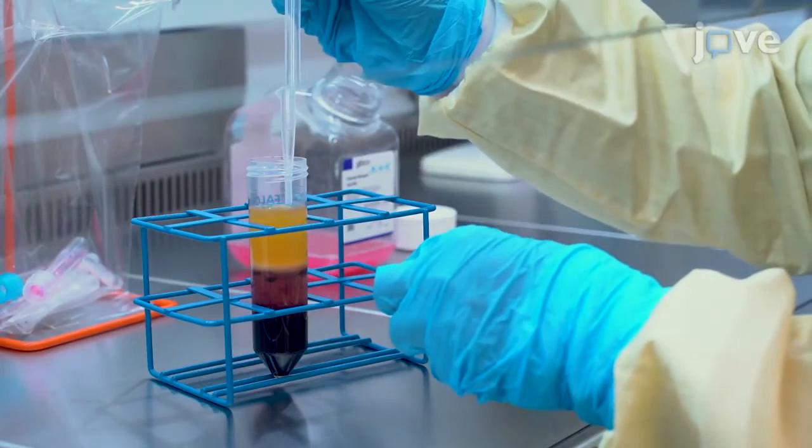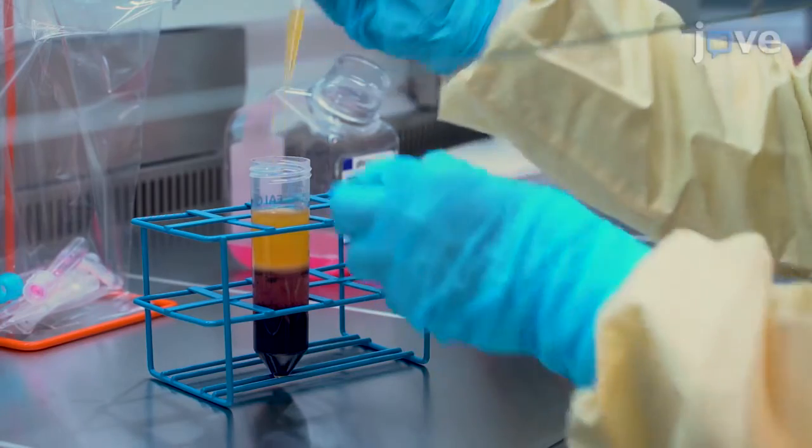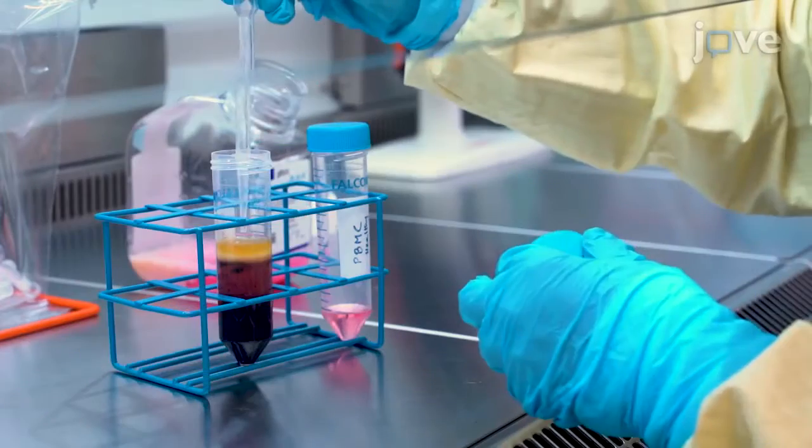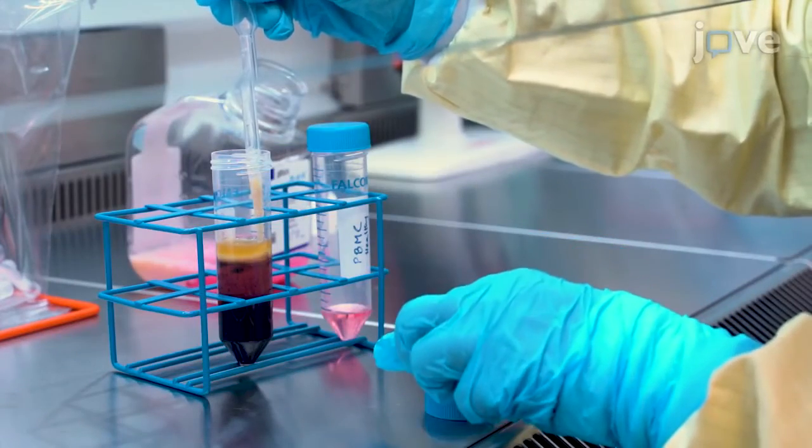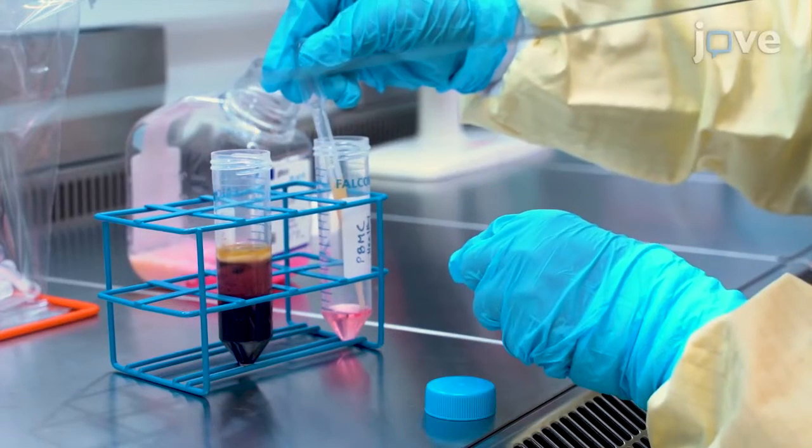Use a sterile Pasteur pipette to remove the top plasma layer and carefully transfer the mononuclear cell layer into a new 50 milliliter tube.